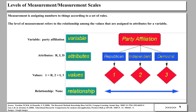Let's look at some definitions. The act of measurement is assigning numbers to things according to a set of rules. We're going to be talking today about four different sets of rules, or four different measurement scales, that are used to assign numbers and values.